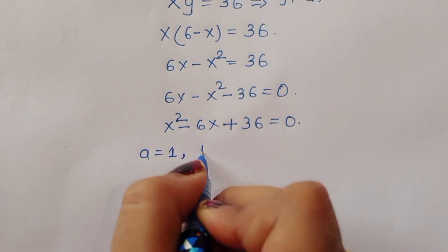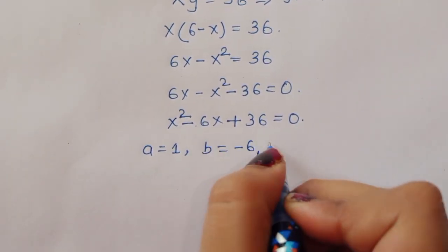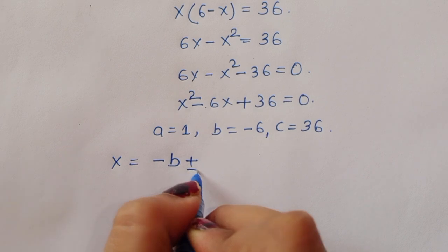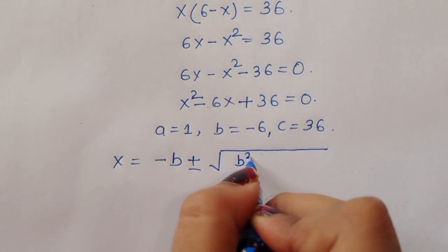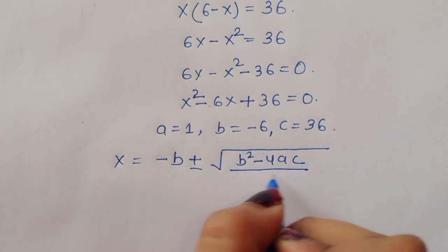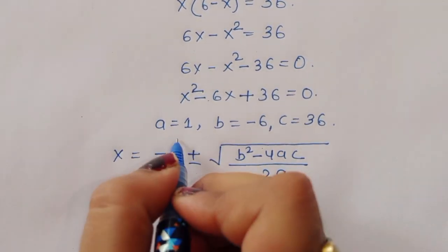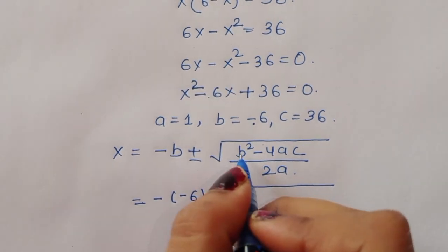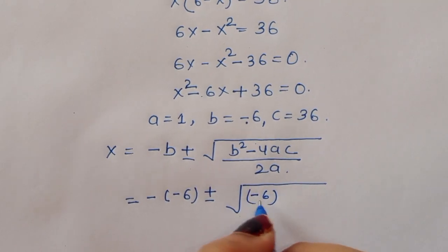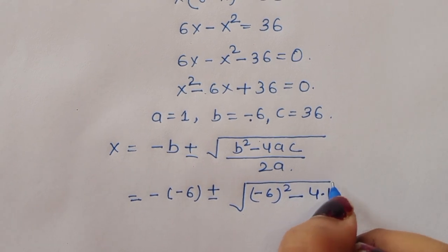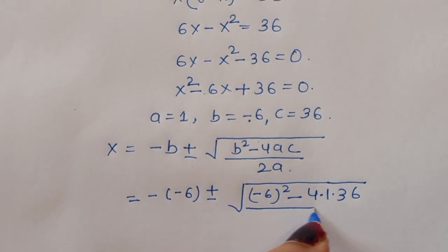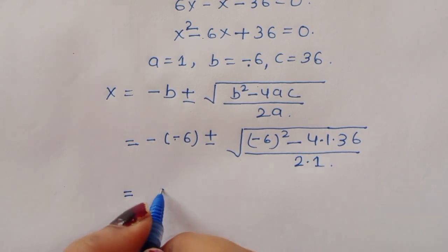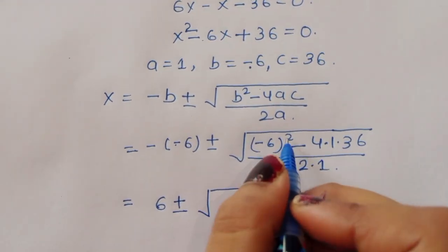Now identifying the coefficients: a equals 1, b equals minus 6, and c equals 36. Applying the quadratic formula: x equals minus b plus or minus the square root of (b squared minus 4ac), all divided by 2a. Substituting: minus b is minus(minus 6), b squared is (minus 6) squared, and 4 times a times c is 4 times 1 times 36.